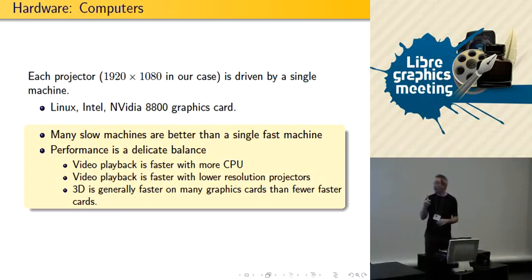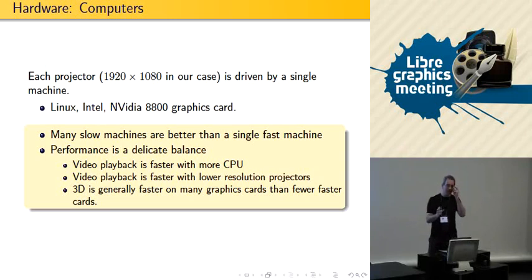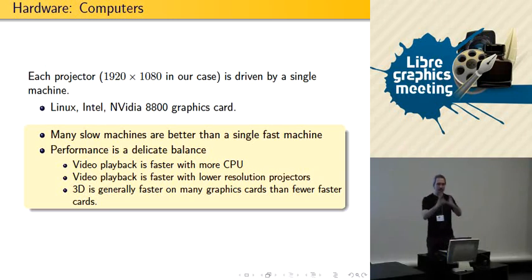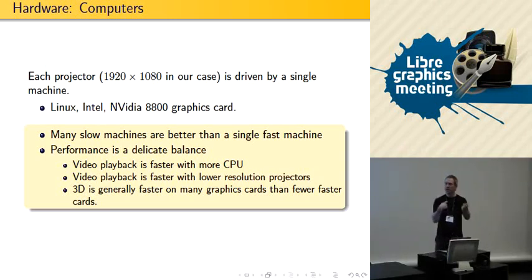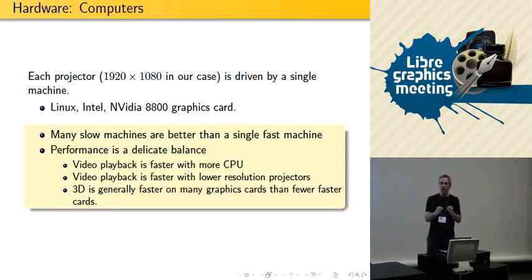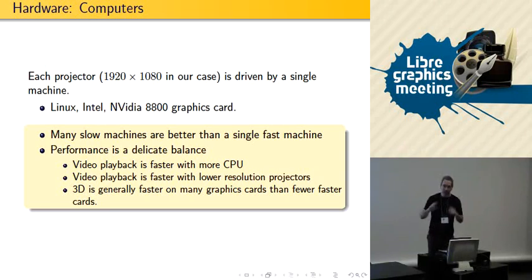We could discuss for a long time how to do 3D on multiple machines — there are many different approaches. What we've done is take everything that is static and send it to all the machines separately; the machines don't exchange 3D information. They only exchange the smallest amount of information, like position information.